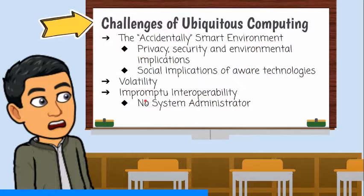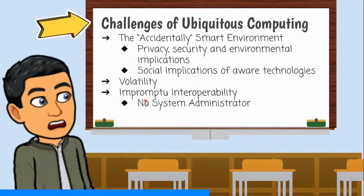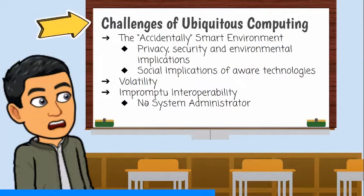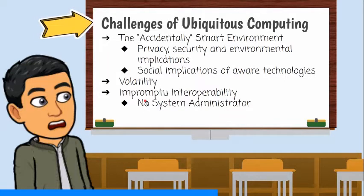Impromptu interoperability. This means many technology-producing companies produce their own products speaking their own proprietary language. This leads to non-interoperability between devices from different companies, resulting in a lack of systems, administrations, or regulations.